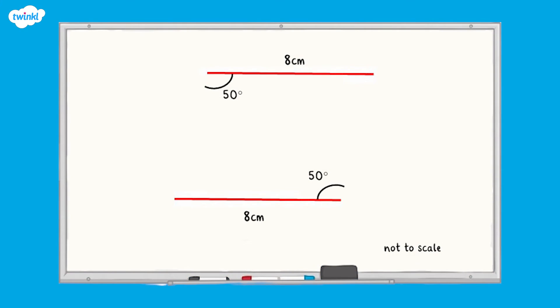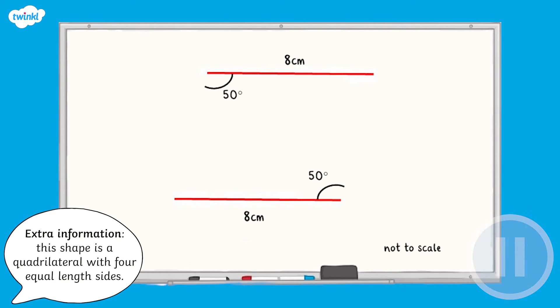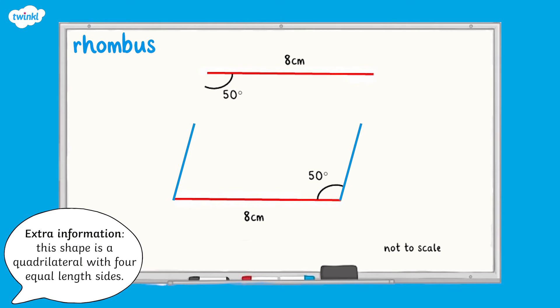Now let's try to draw some shapes on plain paper. Here is a partially drawn shape; we are going to work out what shape it will be when complete. The shape has two equal sides of 8 centimetres, not directly opposite each other, and two opposite equal angles of 50 degrees. That's correct — it's a rhombus. We know this because a rhombus has two pairs of opposite equal angles and four equal sides.